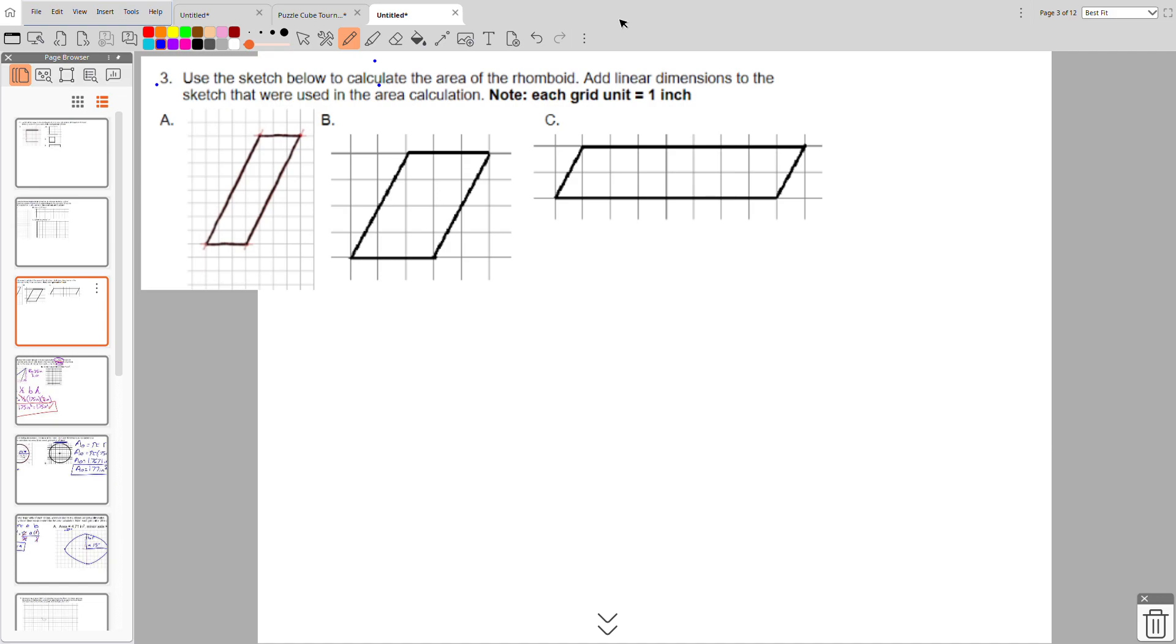All right, here's number three. Let's read it real quick. Use sketch flow to calculate the area of the rhomboid. And these are rhombuses. Add linear dimensions to the sketch that were used in the area calculations.